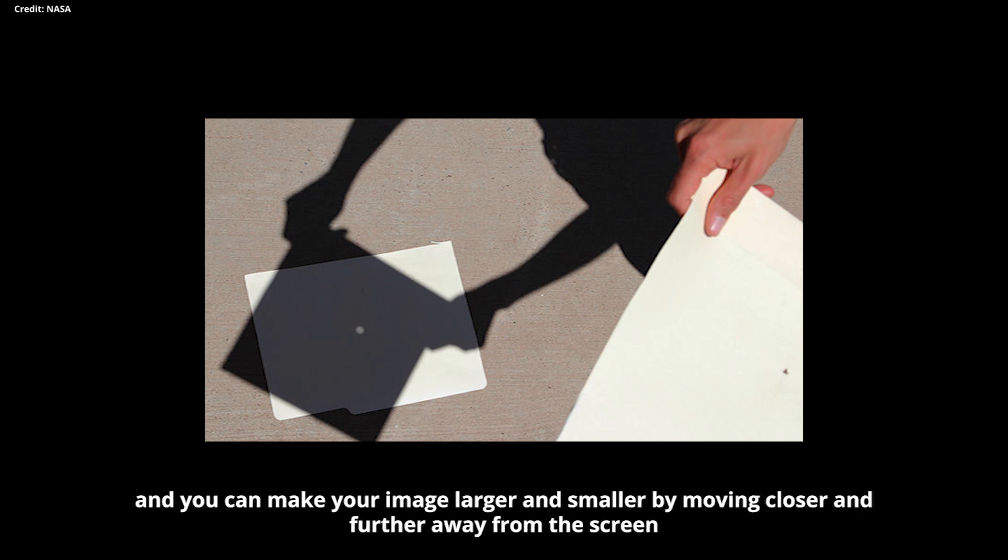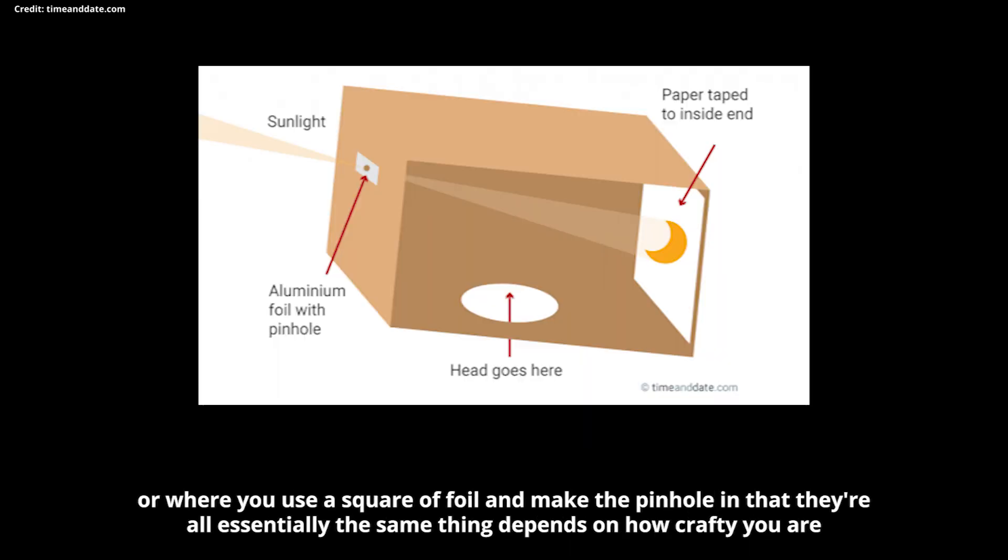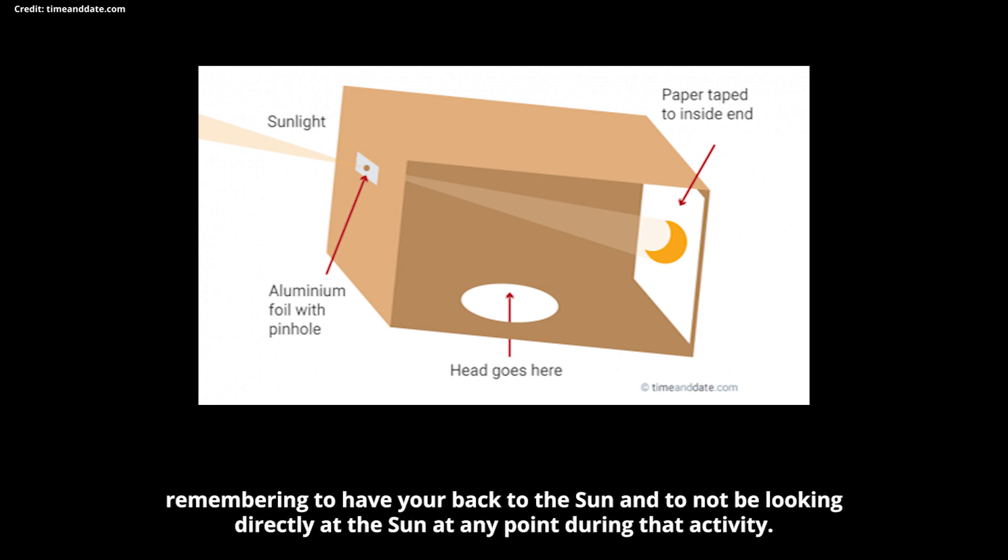And you can make your image larger and smaller by moving closer and further away from the screen. And there are lots of versions of this pinhole method. If you have a look online, there'll be ways to make a pinhole projector in a box or ways where you use a square of foil and make the pinhole in that. They're all essentially the same thing. It depends on how crafty you are. But the very simplest way to do it is a pinhole in one piece of card and project your image onto another piece of card. Remembering to have your back to the sun and to not be looking directly at the sun at any point during that activity.